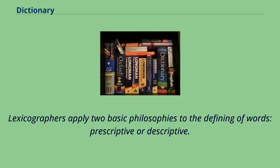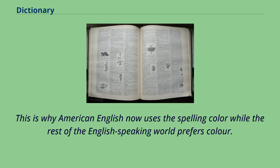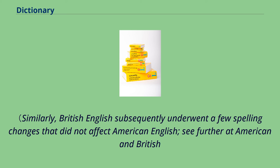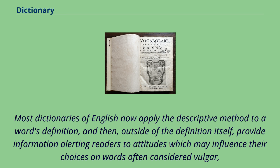Lexicographers apply two basic philosophies to the defining of words: prescriptive or descriptive. Noah Webster, intent on forging a distinct identity for the American language, altered spellings and accentuated differences in meaning and pronunciation of some words. This is why American English now uses the spelling color while the rest of the English-speaking world prefers colour. Large 20th-century dictionaries such as the Oxford English Dictionary and Webster's Third are descriptive — an attempt to describe the actual use of words. Most dictionaries of English now apply the descriptive method to a word's definition, and then, outside of the definition itself, provide information alerting readers to attitudes which may influence their choices on words often considered vulgar.